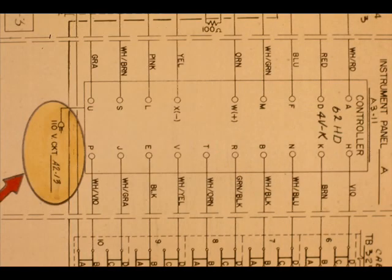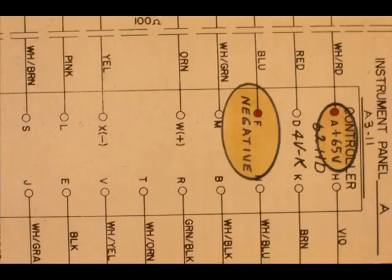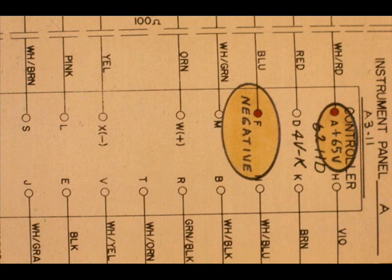This loop functions as follows. The controller receives 110 volts from AC circuit A213. The controller has a built-in power supply. Pin A is plus 65 volts. Pin F is negative.